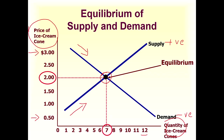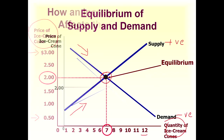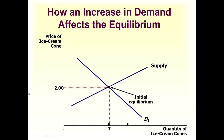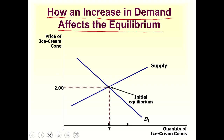Now we will look at an example — examples make a lot of concepts clear. This example is about how an increase in demand affects the equilibrium. We have the demand and supply curves for ice cream. The initial equilibrium is at quantity 7 and price 2. We are going to see how an increase in demand affects this equilibrium.